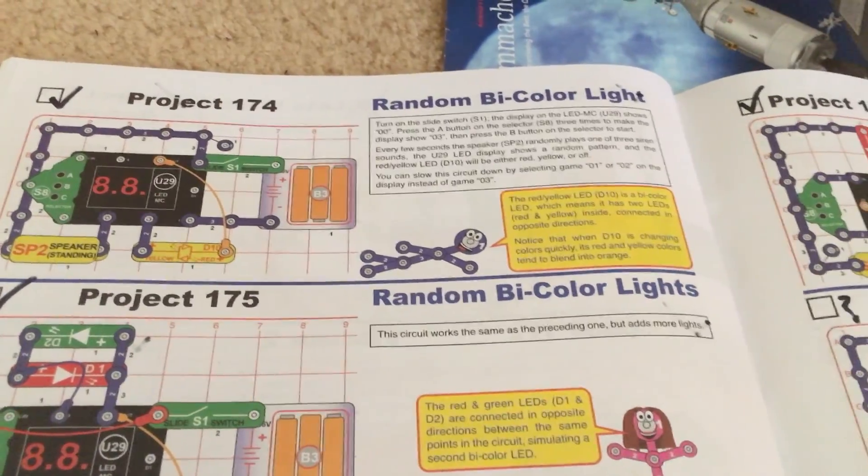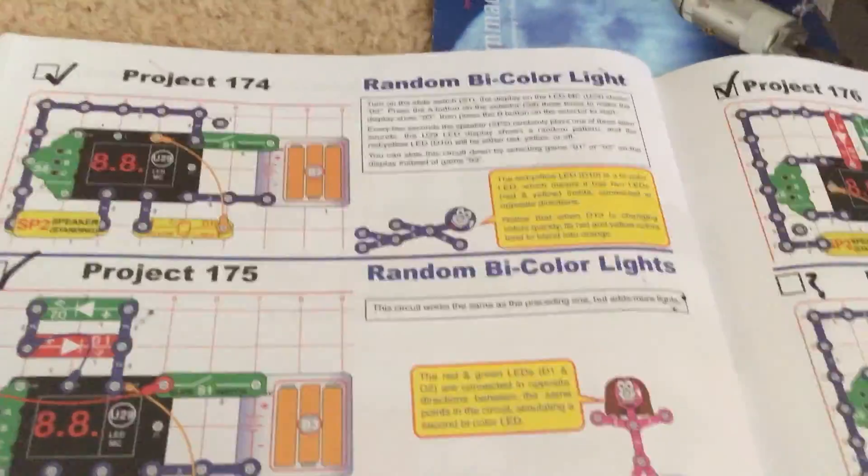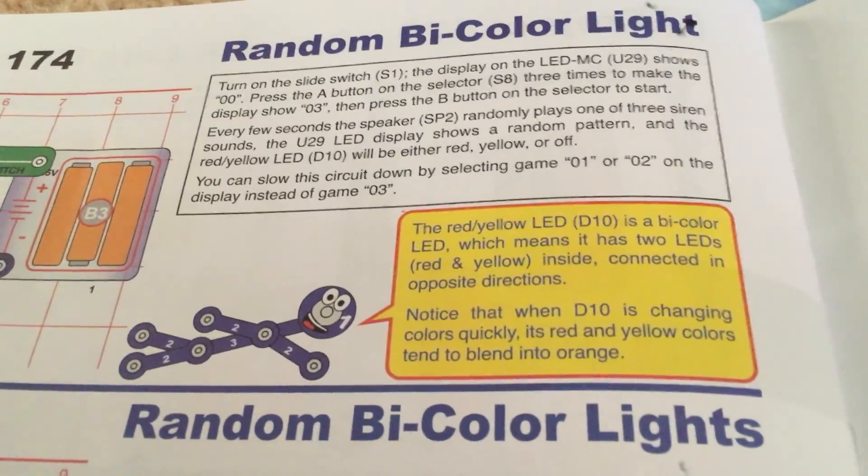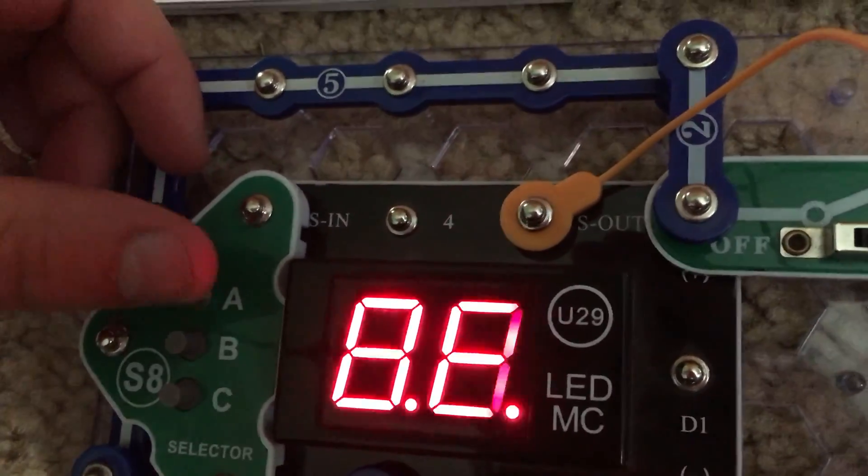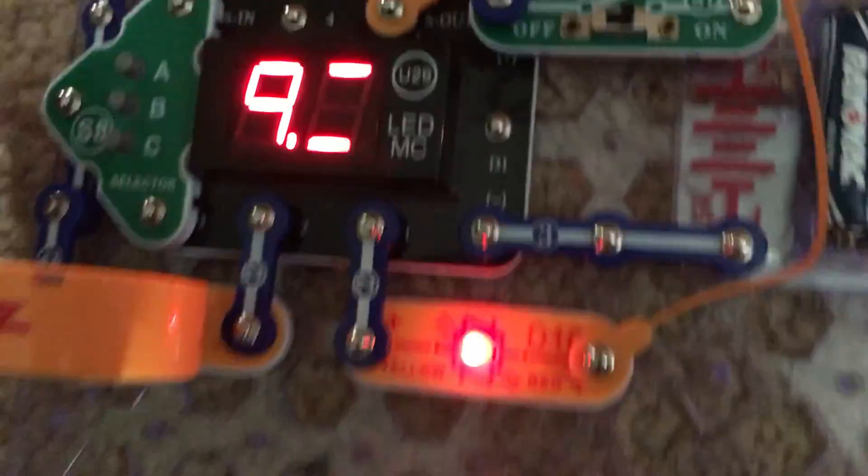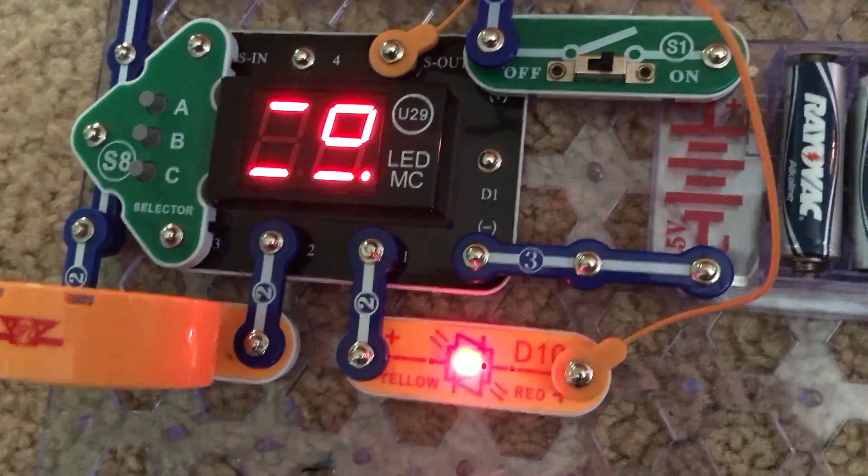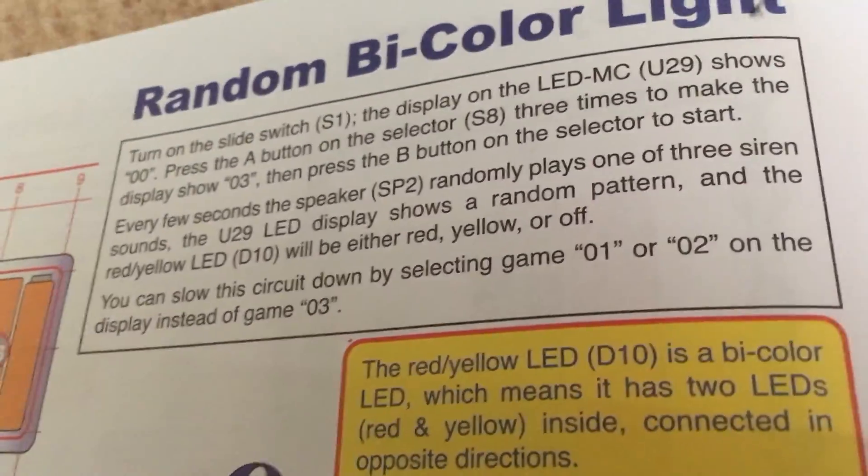174 is random bicolor light. For this project we are going to turn on the slide switch and select game 3.